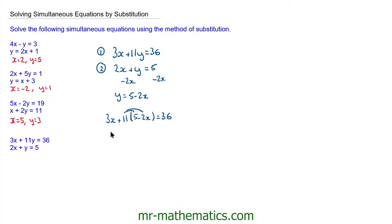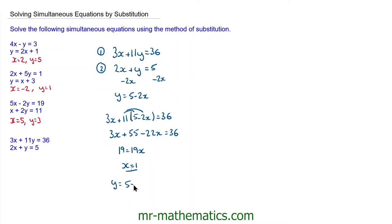So we have 3x plus 11 lots of y — so 5 minus 2x — is equal to 36. We can expand this bracket out: so 3x plus 55 minus 22x is equal to 36. Moving the x terms to the right-hand side, we have 19 is equal to 19x, so x is equal to 1. Now we can work out y: y is equal to 5 minus 2 lots of 1, so y is equal to 3. And we can check: 3 lots of 1 plus 11 lots of 3 — well, 3 plus 33 does make 36.